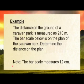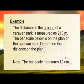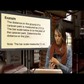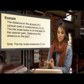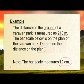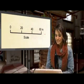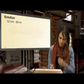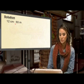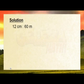Our other example: the distance on the ground of a caravan park is measured to 210 meters. The bar scale on the plan measures 12 centimeters. Determine the distance on the plan. The bar scale tells us that 12 centimeters represents 60 meters. So for every 12 centimeters, we get 60 meters. That's what the bar scale represents. We're going to put that into our formula: 12 centimeters gives us 60 meters in reality.